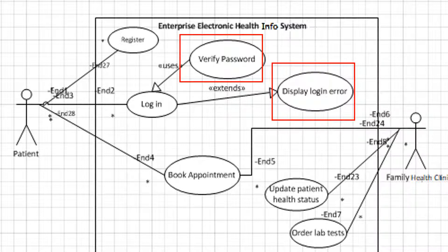Why is that? For verify password, we have the use or include arrow. That means that every time the patient logs in, the system automatically verifies that password to ensure that the patient's credentials are correct and that they're actually registered in the system. However, if the patient logs in and the system is unable to find them as a registered user, or if their credentials are incorrect, the system will display a login error. This is denoted with the extend arrow, which means it happens when the patient logs in, but only when certain criteria are met.